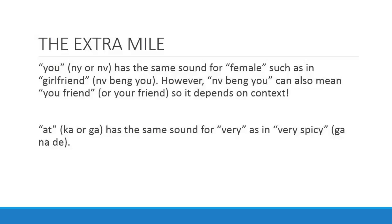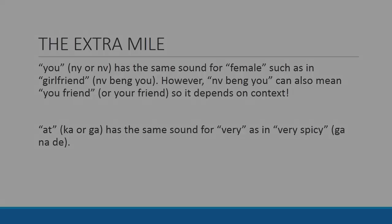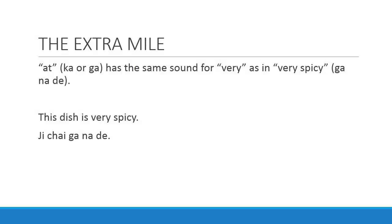The extra mile section: I want to include this for people who want to learn extra material beyond the primary content. So nǔ has the same sound as the word for female, such as in 'girlfriend,' which is nǔ bǐng nǔ. The second point is that 'at,' which is gà, has the same sound as 'very,' such as in 'very spicy' — we say gà nǔ dǐ. For example, 'this dish is very spicy' is gà nǔ dǐ.